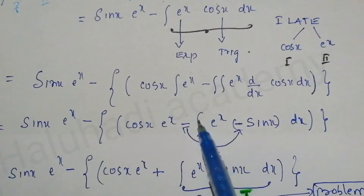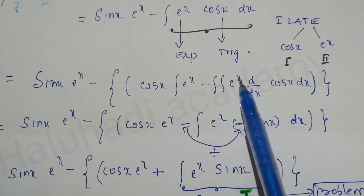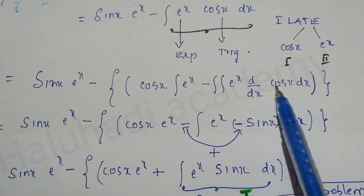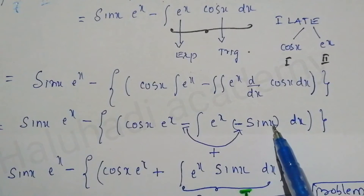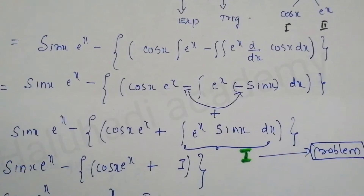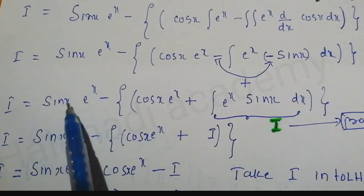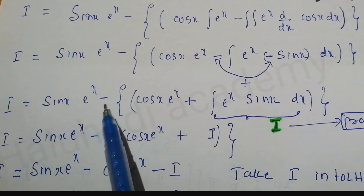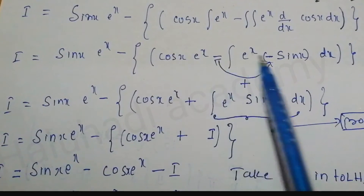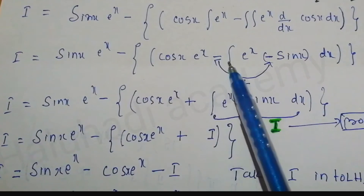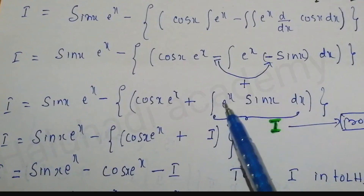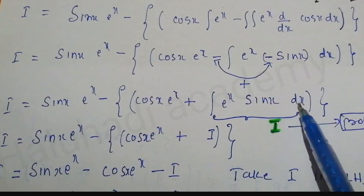Expanding: sin x · e^x minus cos x · e^x, and the differentiation of cos x is minus sin x dx. So minus times minus gives plus, yielding: i = sin x · e^x minus cos x · e^x plus integral of e^x sin x dx.